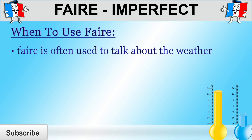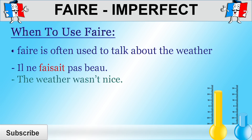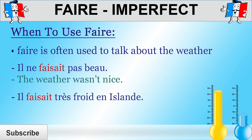And finally, faire is also often used to talk about the weather, particularly when talking about the temperature or whether the weather is nice or not so nice. For example, il ne faisait pas beau — the weather wasn't nice. Il faisait très froid en Islande — it was very cold in Iceland.